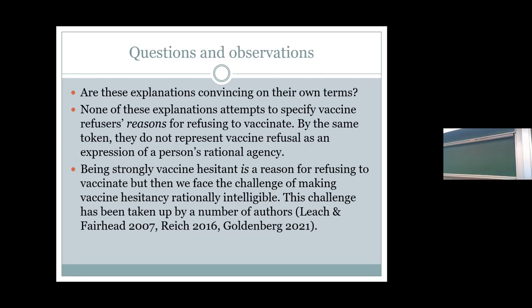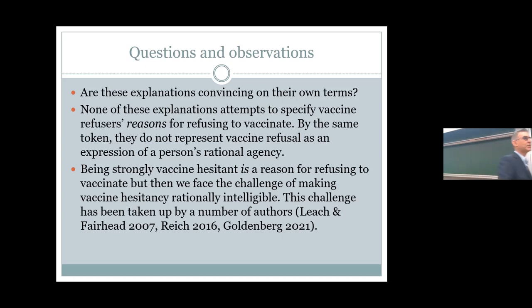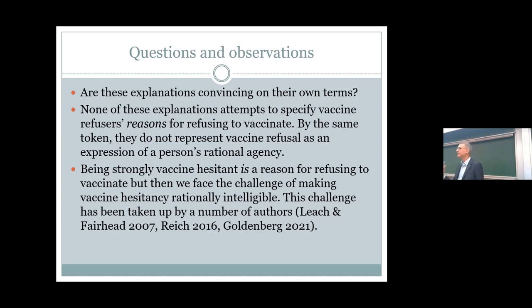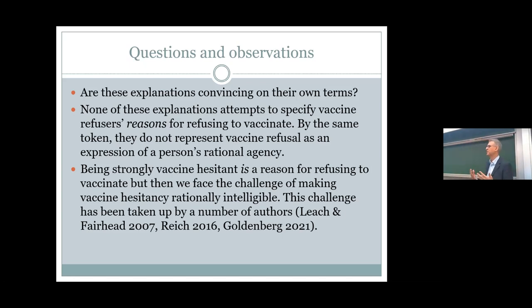One thing you might say in response is that if someone is vaccine hesitant — ambivalent or skeptical about the necessity or safety of vaccines — that really would be a reason for refusing vaccines. Maybe not a good reason, but certainly it looks like a reason. But all that does is push the problem a stage further back: now we have the same cluster of questions about vaccine hesitancy itself. How do we explain that? Should we be looking for an outsider or an insider explanation? Should we explain hesitancy in terms of reasons or causal factors?